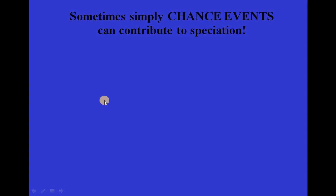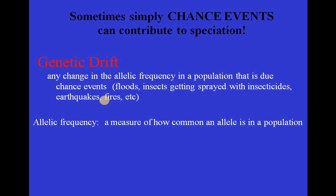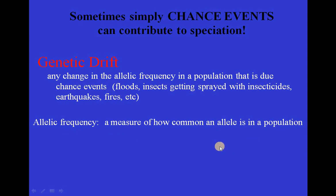Sometimes chance events can contribute to speciation, for example genetic drift — any change in allelic frequency in a population due to chance events such as floods, insects exposed to insecticides, earthquakes, and fires. Allelic frequency is a measure of how common an allele is in a population. This is especially true in small populations, where the chance of losing an allele is greater.